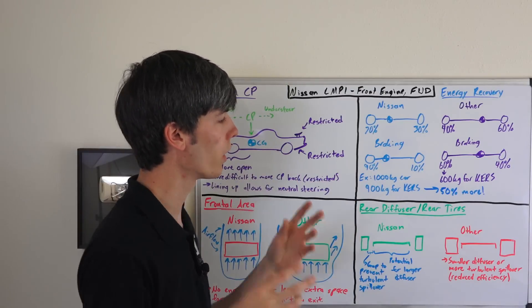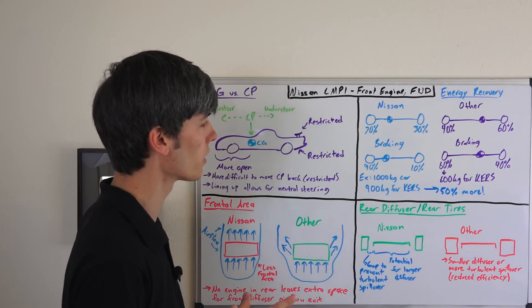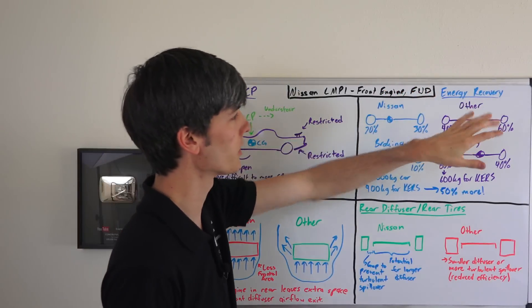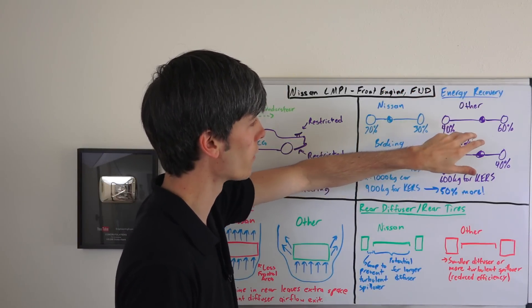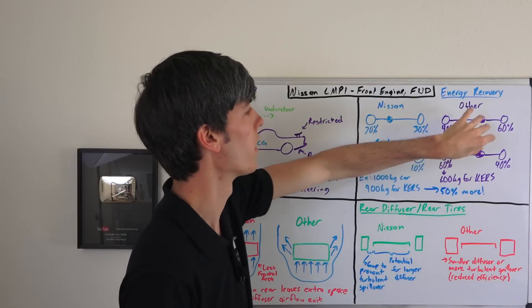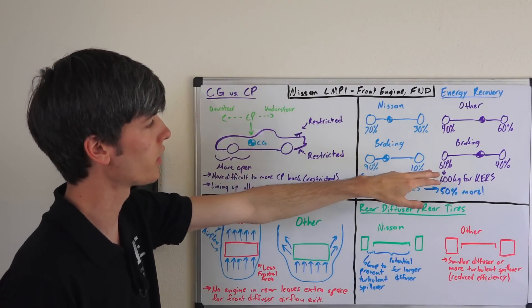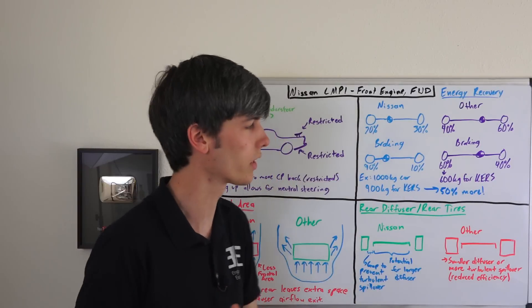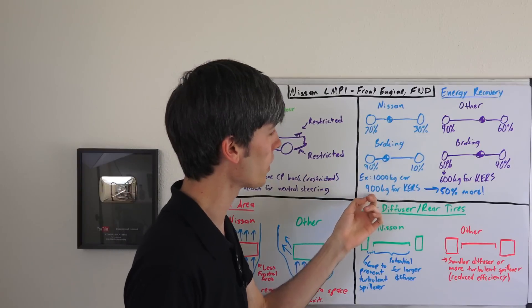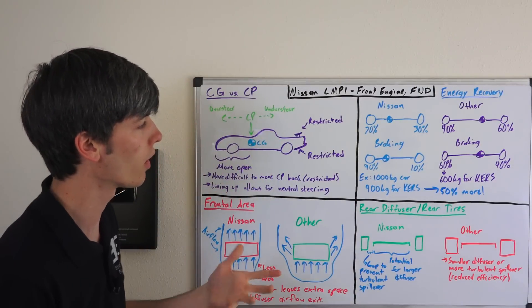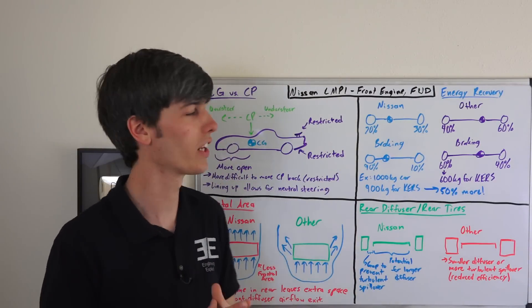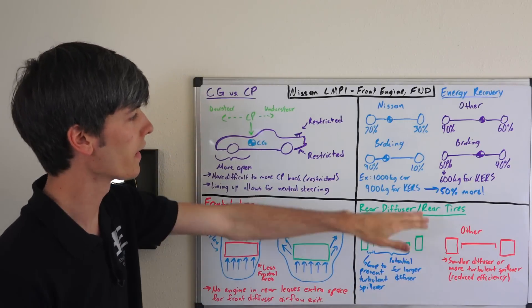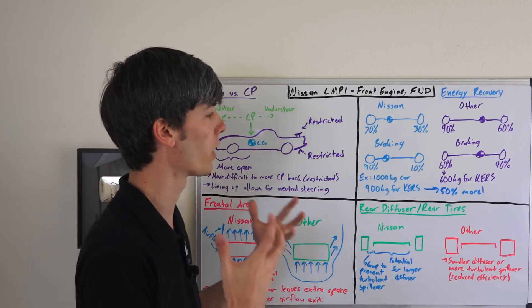So if our car was, let's just pull out a simple number, a thousand kilograms, then we'd have 900 kilograms that we could use for kinetic energy recovery. Now, if we look at the competition, and say they have a 40-60 split because it's rear-wheel drive, and they've got a slight rear bias, and then under braking, they have 60% load transfer to the front, well, that's going to give them 600 kilograms if the car weighed a thousand kilograms. And so as you can see, the Nissan here at 900 versus 600, 50% more mass to use for kinetic energy recovery. So potentially, because kinetic energy is a function of mass times velocity squared, they have a potential of 50% more energy that they could recover.